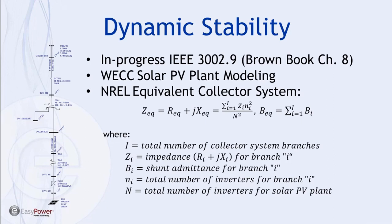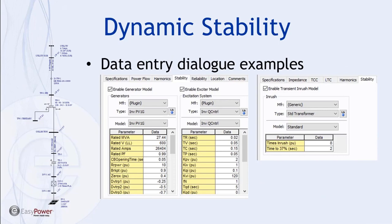Each generator and inverter within EasyPower will have a stability tab where you can enter data for the models of that generator and its excitation system. In this case we're using an inverter-type generator model. The program provides some default values, but there are fields that should be user-customized — things like the rated MVA, voltage, and amps of your equivalent inverter. You can also model inrush characteristics for transformers and there are some load dynamic modeling capabilities.